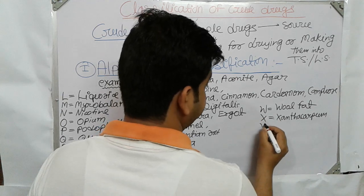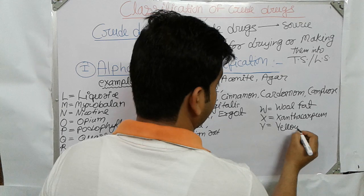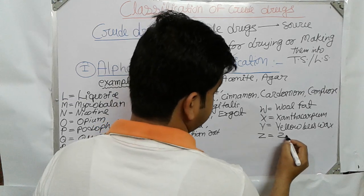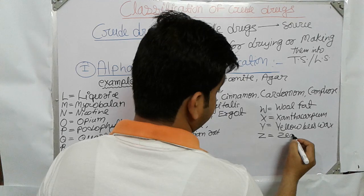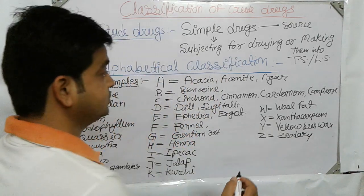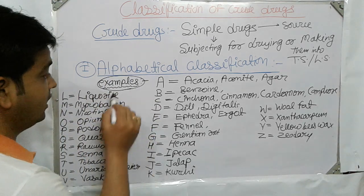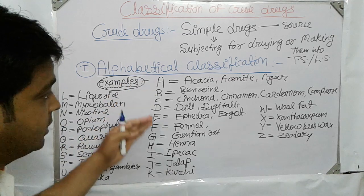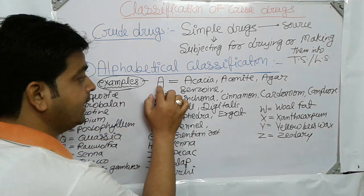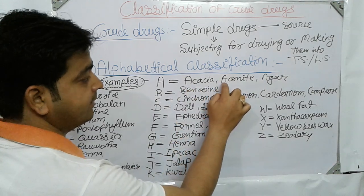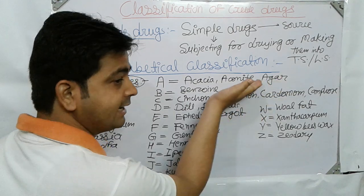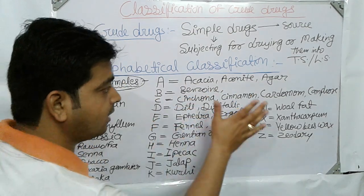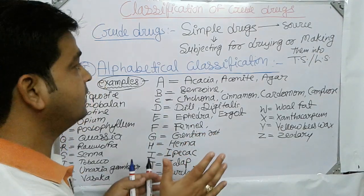V for Vasaka. W for Wool Fat. X for Xanthocarpum. Y for Yellow Beeswax. Z for Zingiber. So each and every alphabet has crude drugs assigned to it. According to alphabetical order, whichever crude drug's English or Latin name starts with A is kept in the A category, B in the B category, and so on — that is called alphabetical classification of crude drugs.